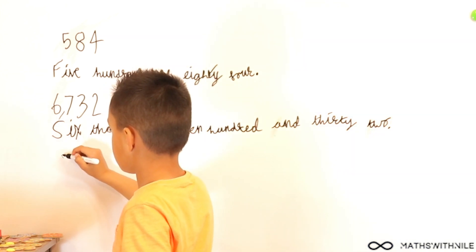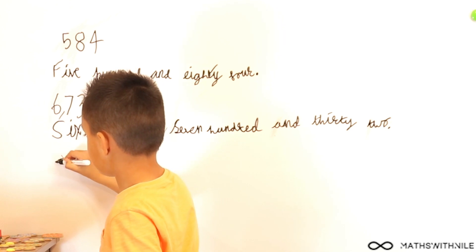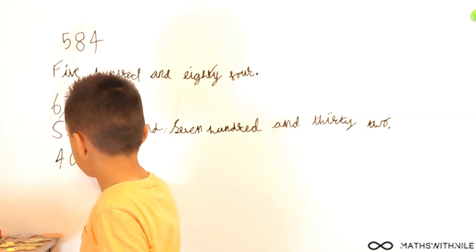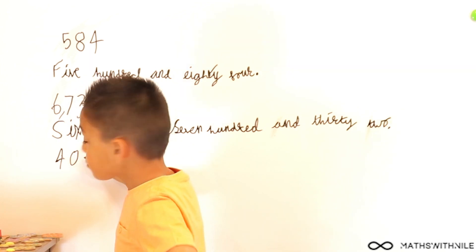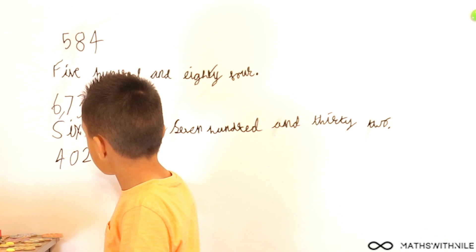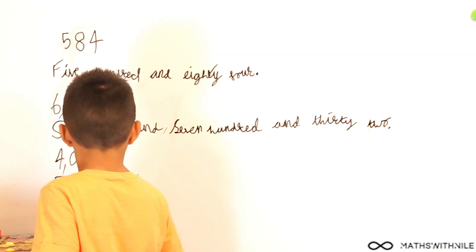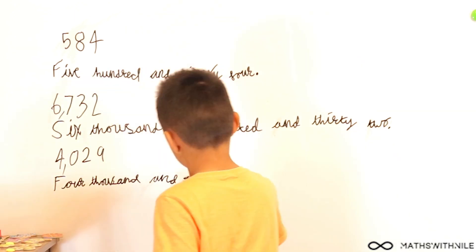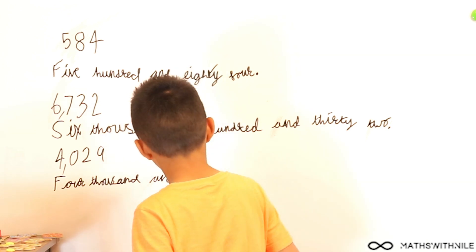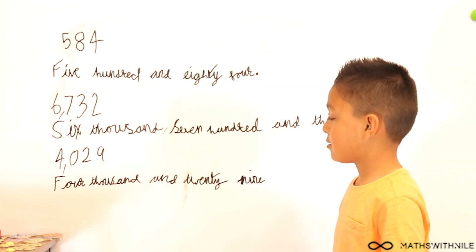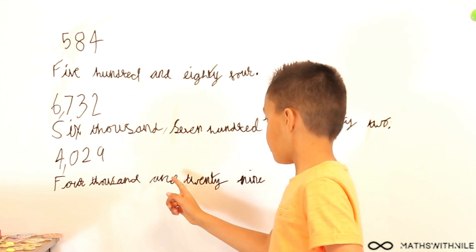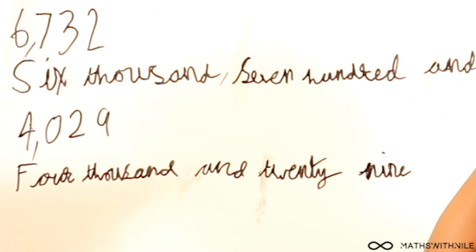Can you write 4, 0, 2, 9? 4,029. There's no hundreds, so you didn't put in a comma. So we've got four thousand and twenty-nine.